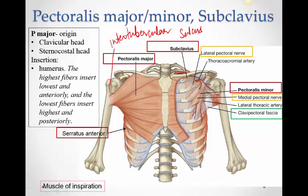The nerve supply of pectoralis major is by two nerves: the lateral pectoral and medial pectoral. It's a large muscle, hence the dual nerve supply. Pectoralis minor is supplied just by the medial pectoral nerve — it's a tiny muscle, so just one nerve. Subclavius has its own nerve called the nerve to subclavius, which we'll see when we draw the brachial plexus.